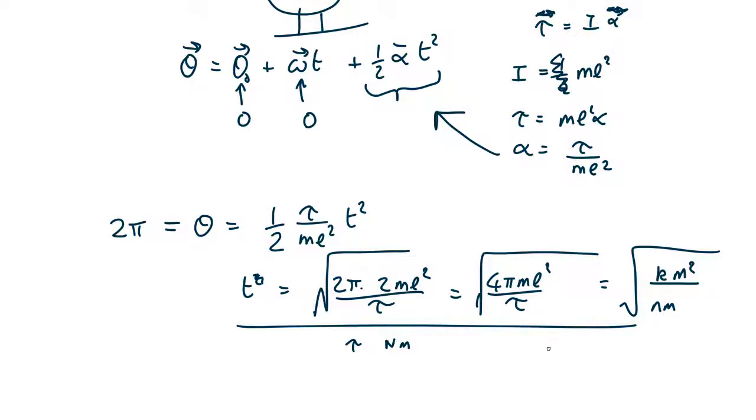Now force has units of kilogram meters per second squared. So this is going to have units of kilogram meters squared all over kilogram meters per second squared times meters. So kilograms cancel, meters squared cancel, s to the minus 2 at the bottom.